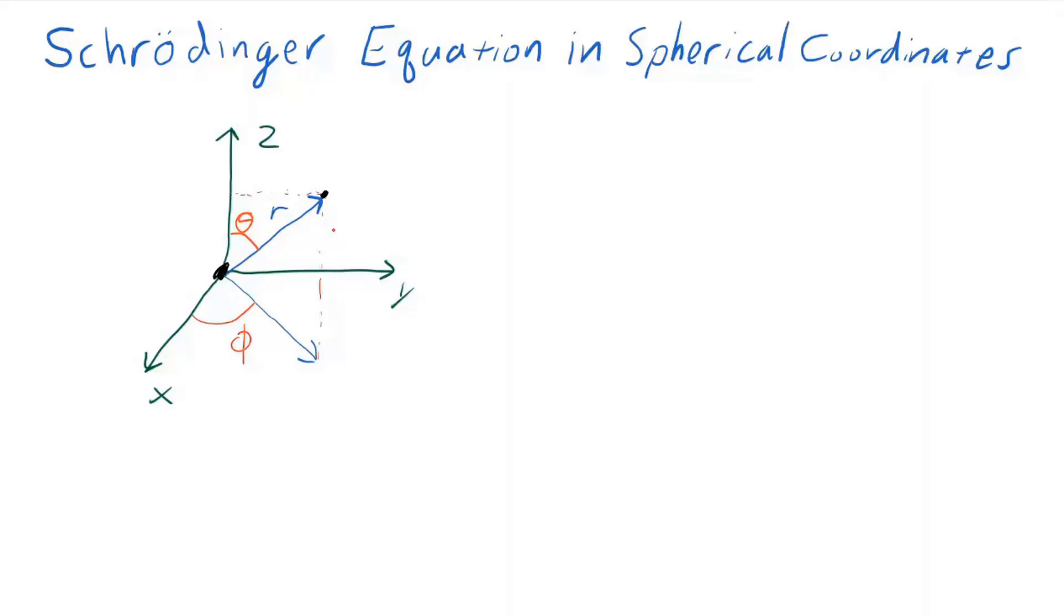The Z coordinate of the electron can be written in terms of R and theta as R cos theta. And this shadow in the XY plane is R sine of theta. So the X coordinate and Y coordinates can be located with an additional trig argument. We have Z is R cos theta, X is R sine theta cosine of phi, and Y is R sine theta sine phi.